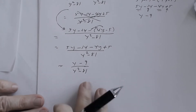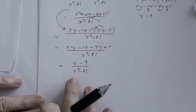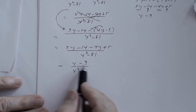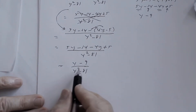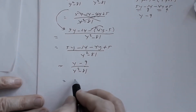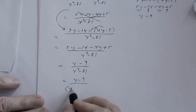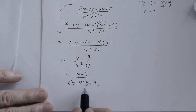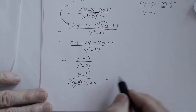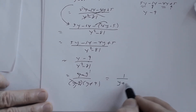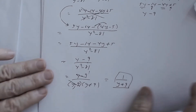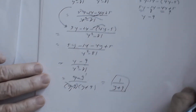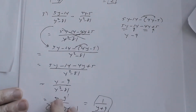Once you get to that point, remember you've got to simplify. I cannot factor the numerator any further, but I can factor the denominator — that is a difference of two squares. So you've got to show y minus 9 divided by y minus 9 times y plus 9, then reduce. The y minus 9 divides out, so the answer is 1 divided by y plus 9.